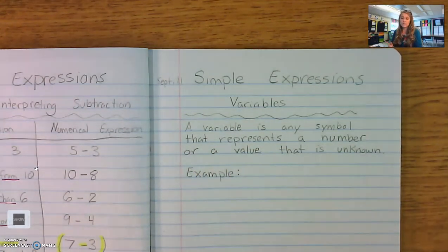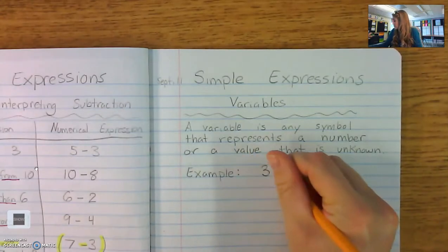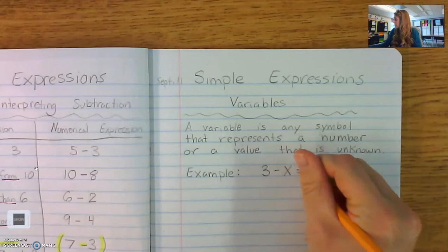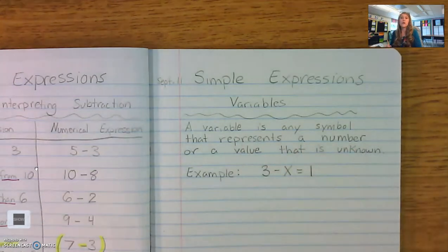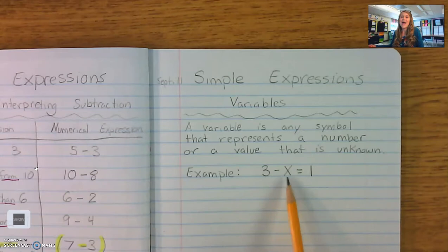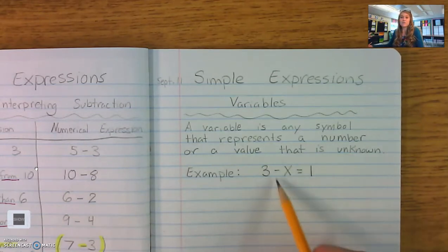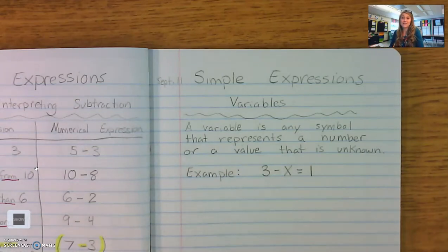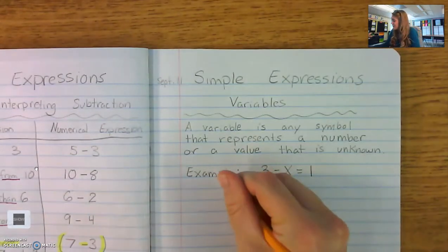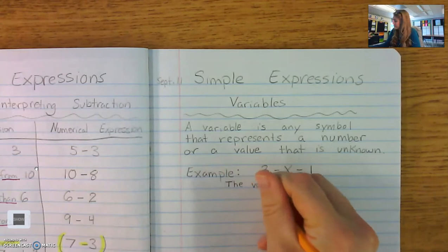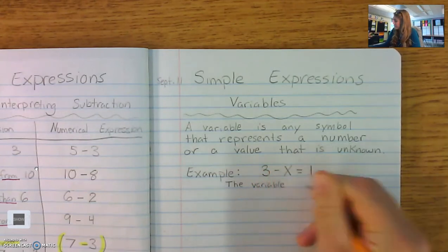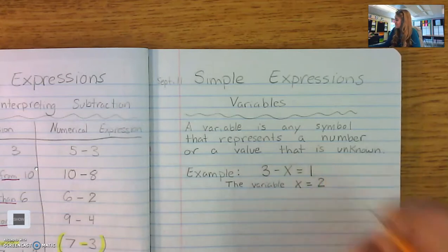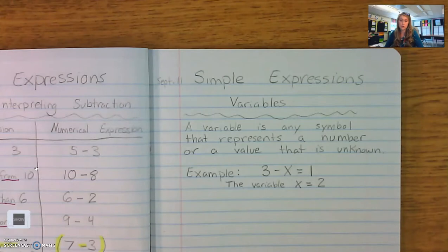So let me give you an example of what that might look like. So you might see a problem looks like this. We would read this problem 3 minus x equals 1. And your job would be to figure out what x equals because x is your variable. And I bet you all have already figured out what x equals, haven't you? What is it? Right. The variable x equals 2. So that's how we can use variables to represent a number we don't know the value of.